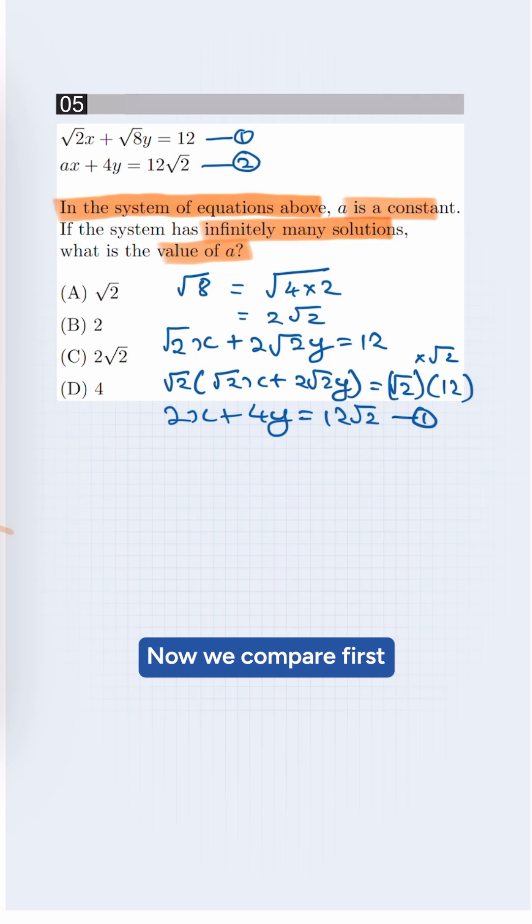Now we compare first and second equation, which is ax plus 4y equals 12 root 2. Comparing both to match the coefficient of x, so a will become 2.